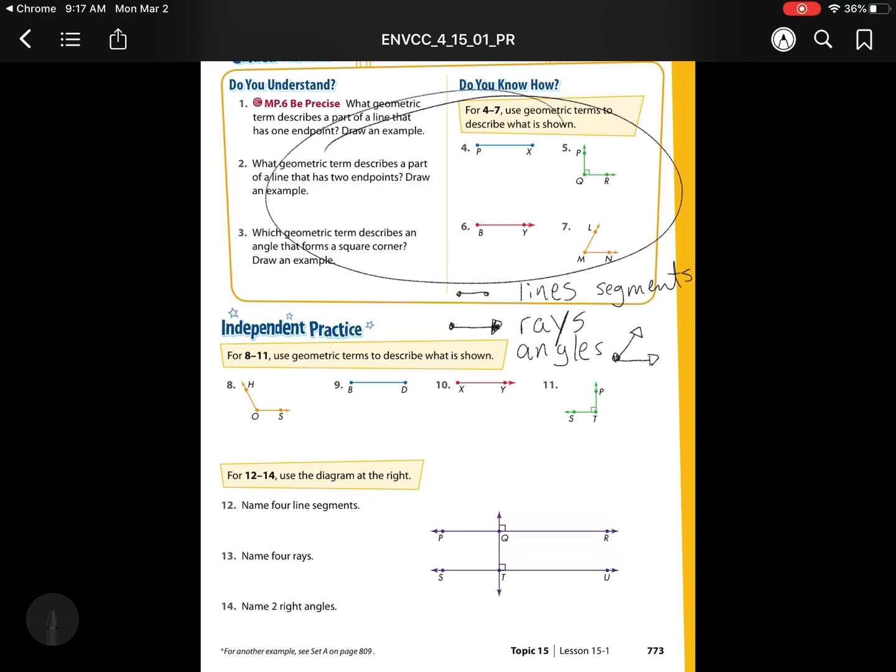Use geometric terms to describe what's shown. This is an angle because I see those two arrows. This is a line segment because I see a start and a stop. This is a ray because I see one start but I don't see a stop because of that part right there. Our last one, this is an angle, but to be fancy, we're going to use a term called a right angle because we see that little box that we've done from third grade.